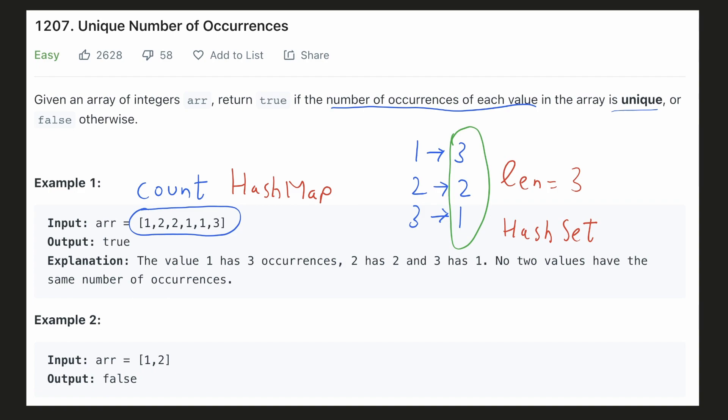If we add all these frequency values in a hash set, then its count should be 3. And since this will match the number of frequency values that we have, our answer will be true.